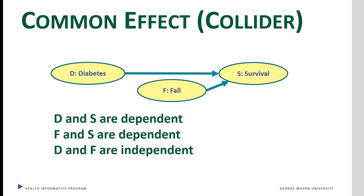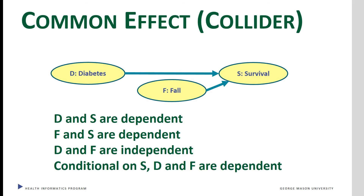The three nodes can also be arranged as a common effect, where two of the nodes cause the third event. Common effect situations are also known as collider tests. Here, diabetes affects survival and falls affect survival, while diabetes and falls are independent of each other. Yet conditional on survival, diabetes and falls become correlated with each other.